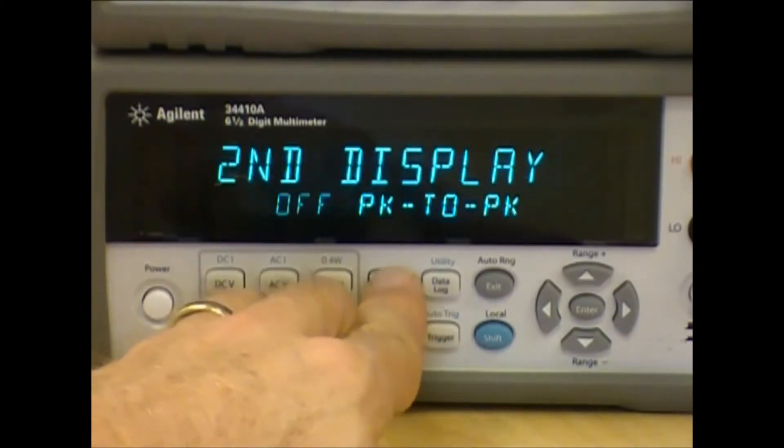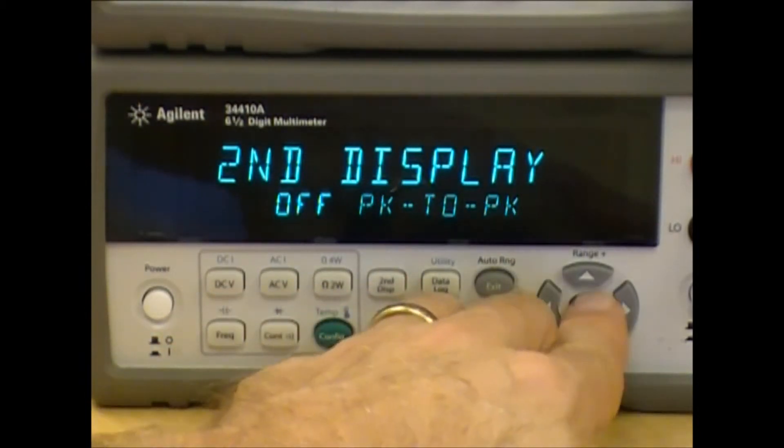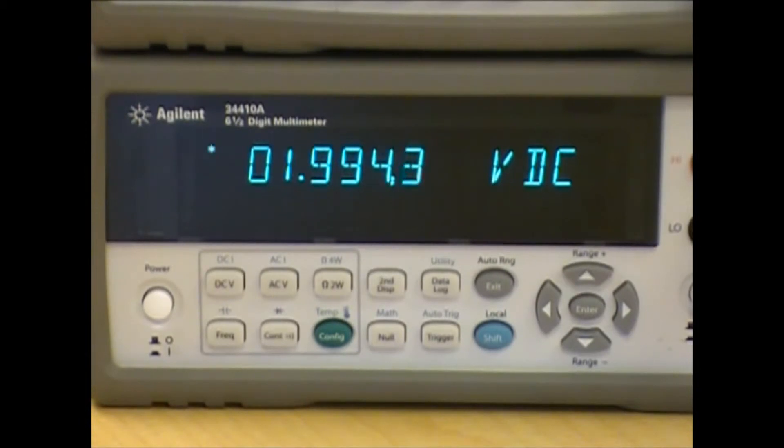Now I'm going to turn off the second display and show how the number of power line cycles affects the readings of a DMM. Remember when we looked at the specifications, if number of power line cycles is 1 or greater, we have good rejection of the noise. If it's less than 1, then we do not reject the power line noise, which is the 60 Hertz 1 volt peak to peak signal.